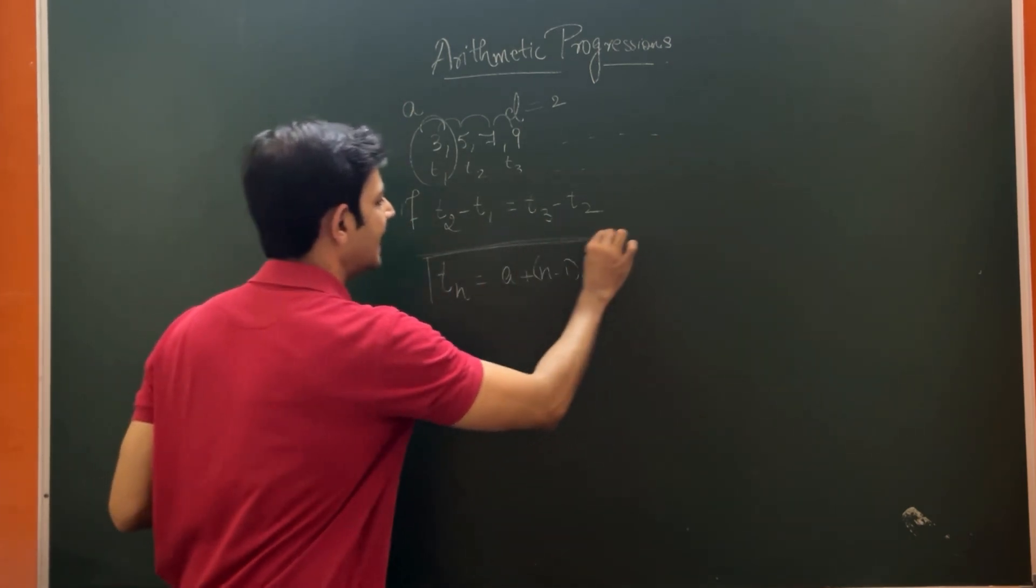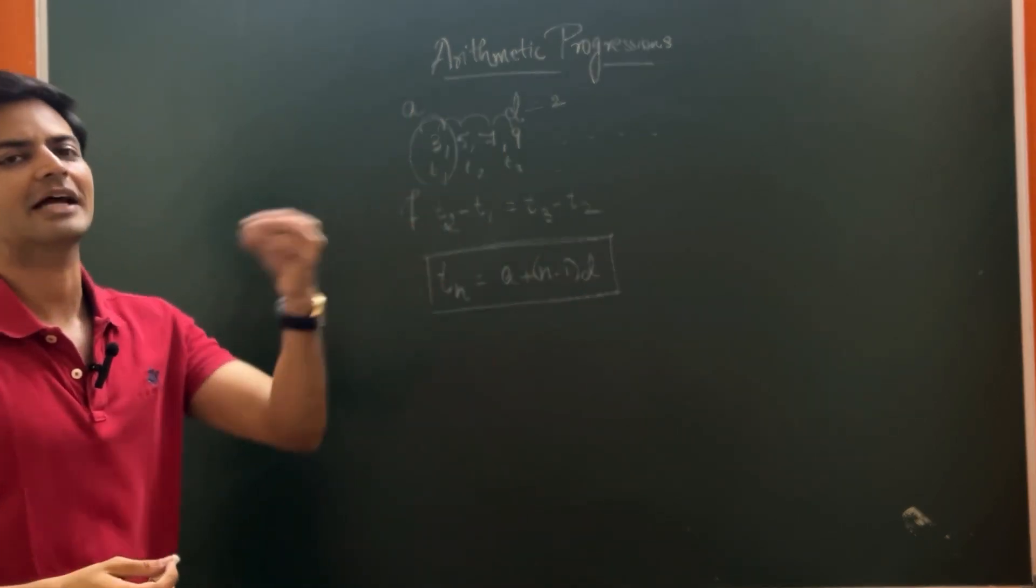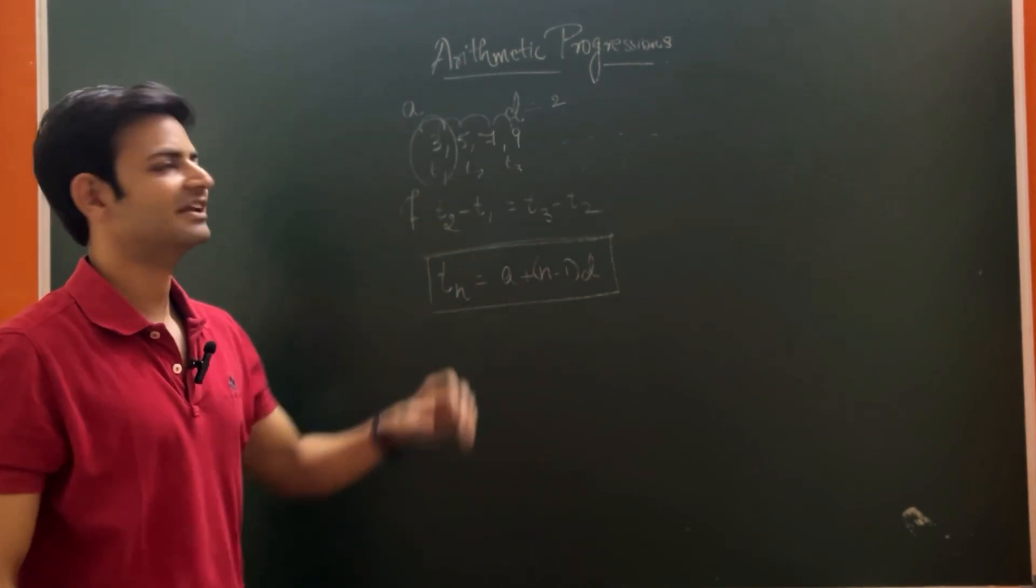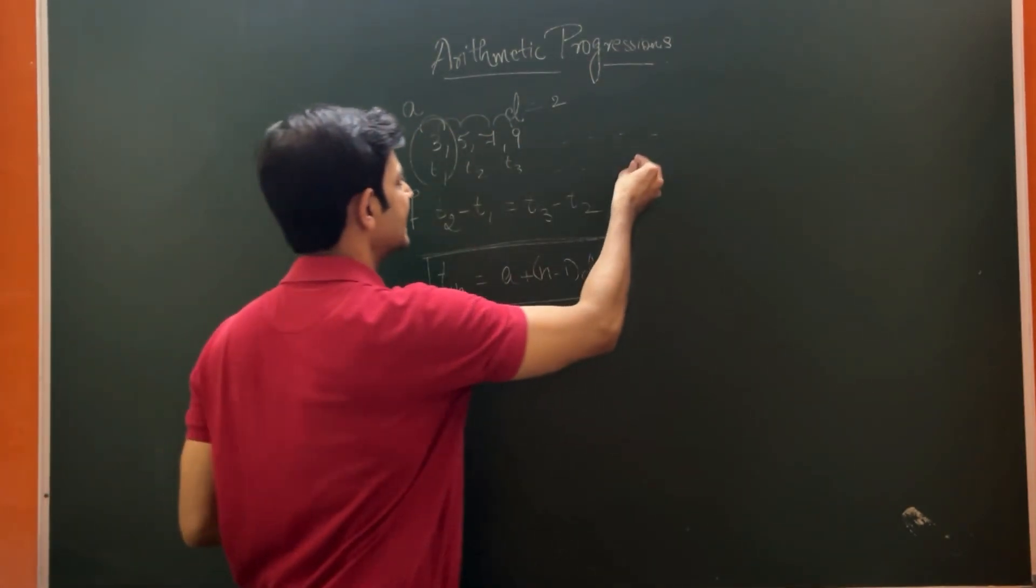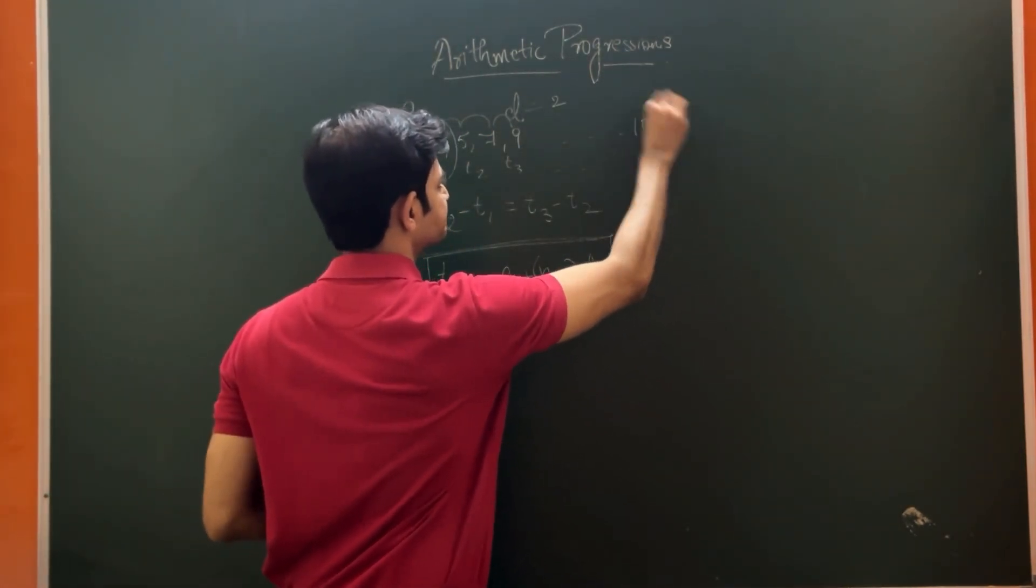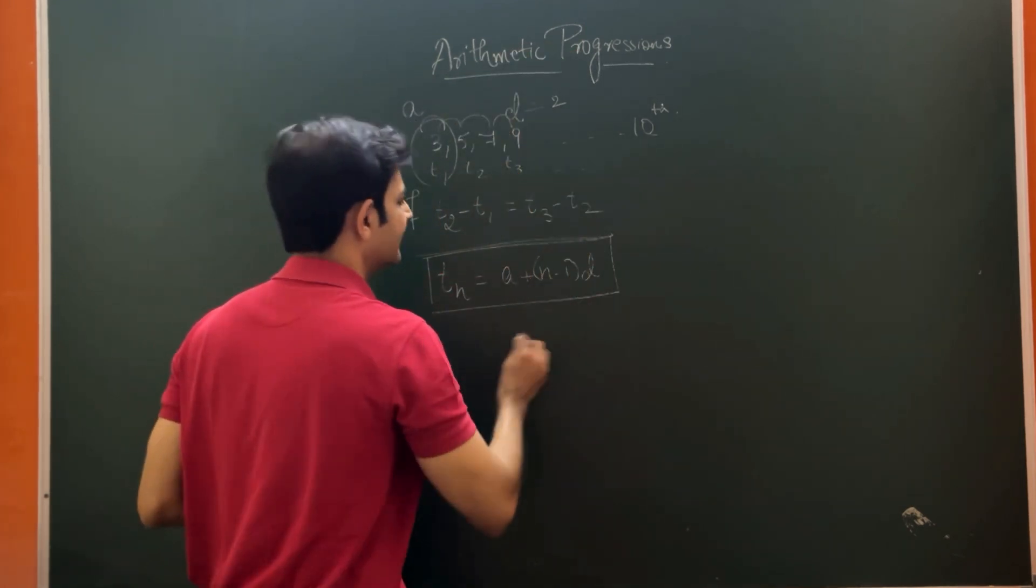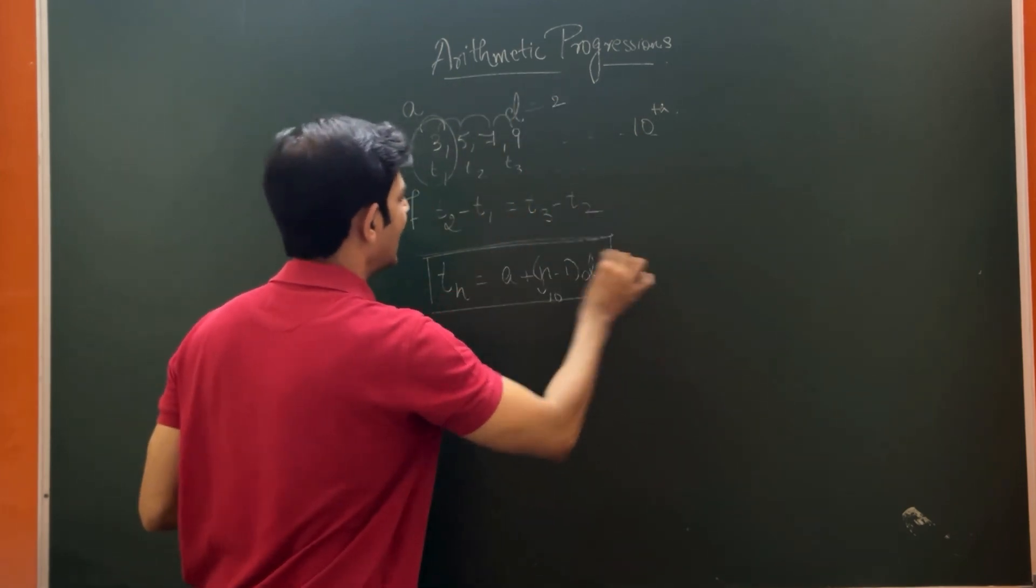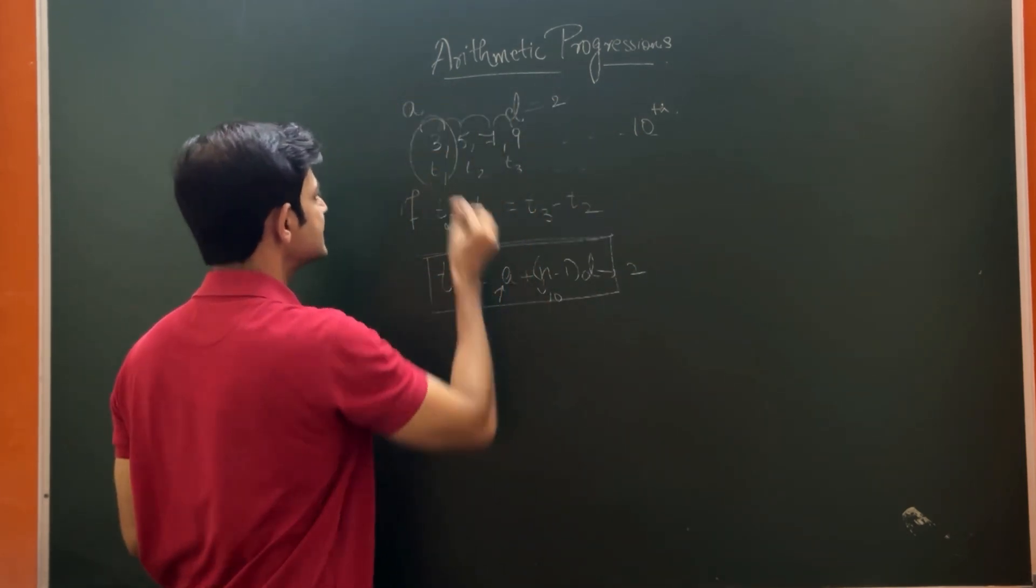Where n is the number of terms, the nth term that we are supposed to calculate. For example, if we take this case and if I want to calculate the 10th term here, in this case, n is equal to 10, D is equal to 2, and A, that is the first term, is 3.